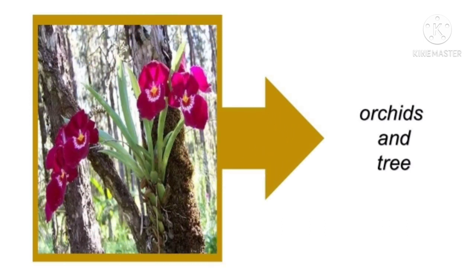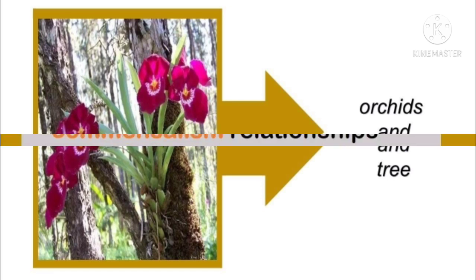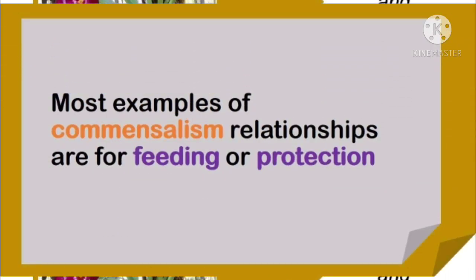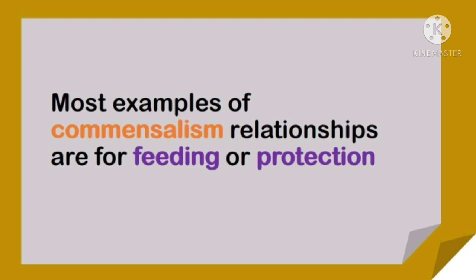The symbiosis between orchids and a tree is also an example of commensalism. In this case, the tree provides shelter and protection for the orchids. Most examples of commensalism relationships are for feeding or protection.